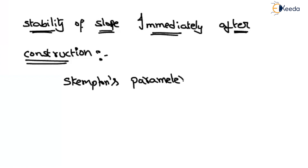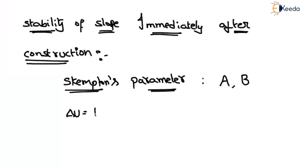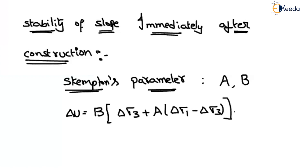In shear strength of soils you would have heard about Skempton's soil parameters. We find out the A value and the B value. The change in pore water pressure can be written as: B times the change in minor stress, plus A times the quantity (change in major stress minus change in minor stress). Using this relation we can find out the change in pore water pressure.